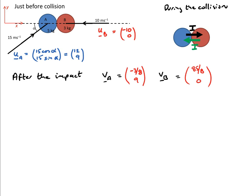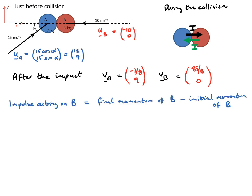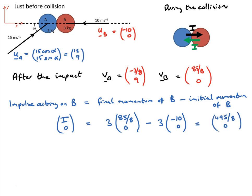We find the impulse acting on B during the collision using impulse equals change of momentum. The impulse vector (I, 0) = 3 × (85/8, 0) − 3 × (−10, 0) = (495/8, 0). So the impulse is 495/8 newton-seconds, or approximately 61.9 newton-seconds.